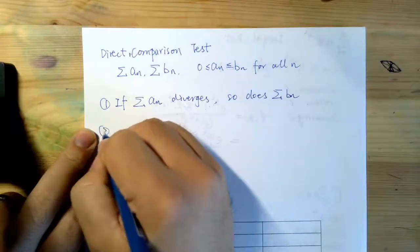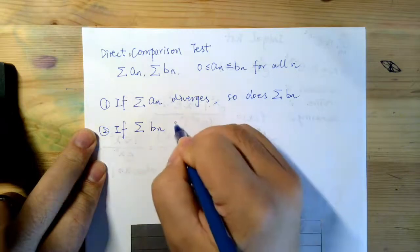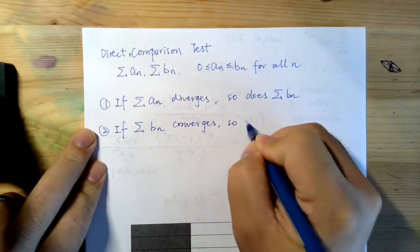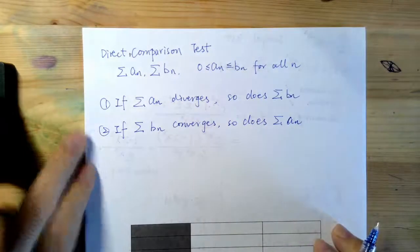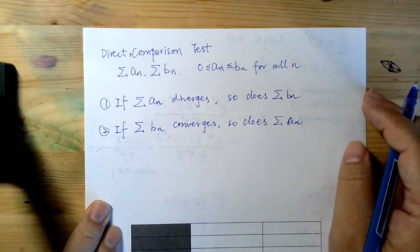And the second is if the series b_n converges, so does a_n. So the idea of this direct comparison test is: